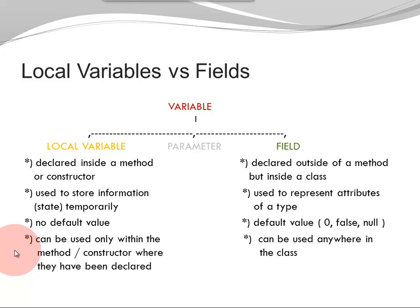And last but not least, local variables can be used only within the method or constructor where they have been declared. Please notice the word only. Local variables definitely cannot be used anywhere outside the method or constructor where they have been declared, but their scope might even be further restricted if they are declared within a code block. Fields can be used anywhere in the class, so we have no restriction to any special code segment here.